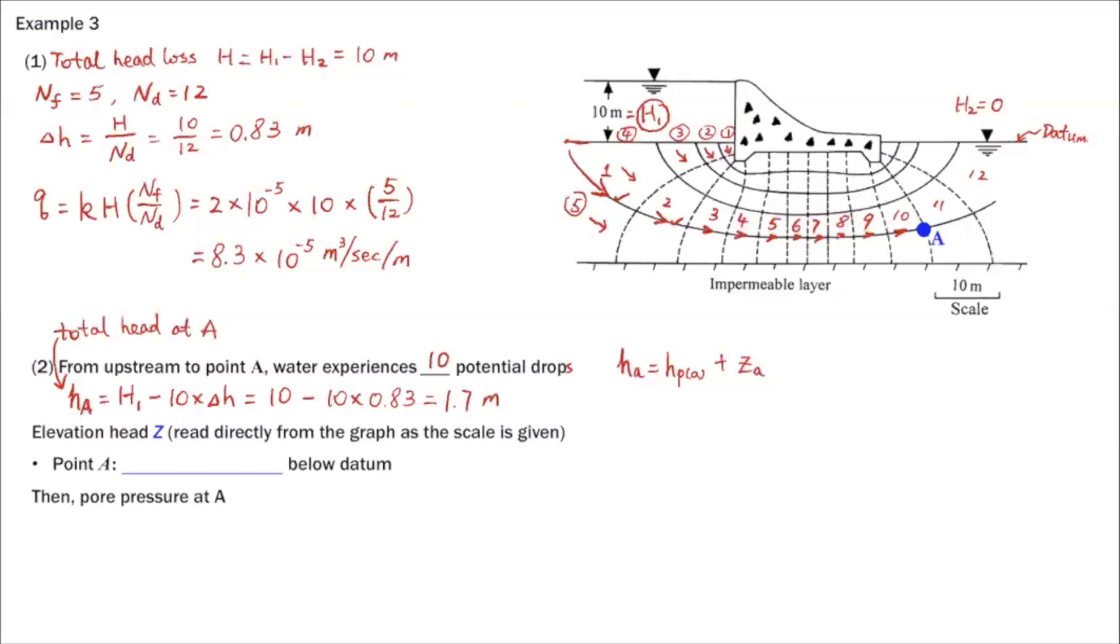And then the elevation head, so now we have this HA here. Let's use capital A. And then this ZA, that's the elevation head, which is basically the distance from point A to your reference datum. And for that, we're going to directly measure this from this graph here. So that's ZA. And we are given a scale. So this is 10 meters on this graph. So you can read this directly from the graph. And it's 15 meters below datum.